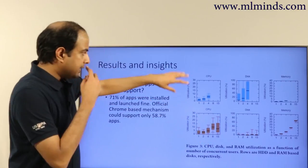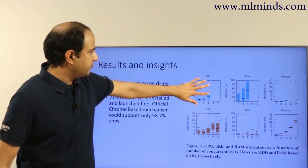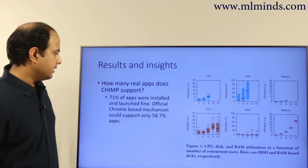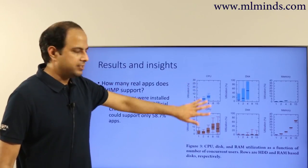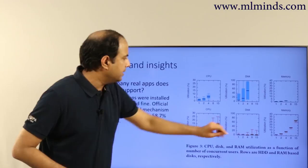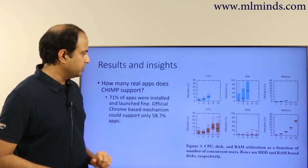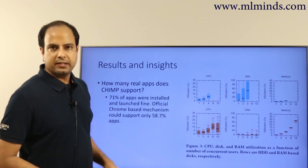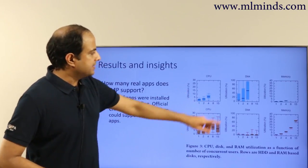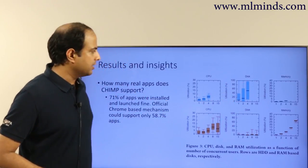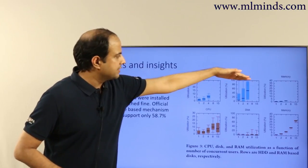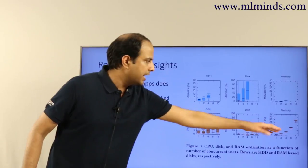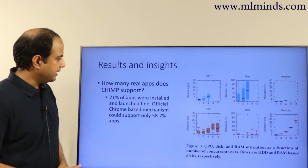This chart shows resource consumption in terms of CPU, disk, and memory for different numbers of concurrent users. When the VM is stored on disk, only about four people could use it concurrently before reaching 100% disk utilization, while RAM usage is minimal. When the VM is stored in RAM, RAM usage is high but disk usage is small. As more people use the machine, utilization increases — so RAM storage allows more concurrent users.